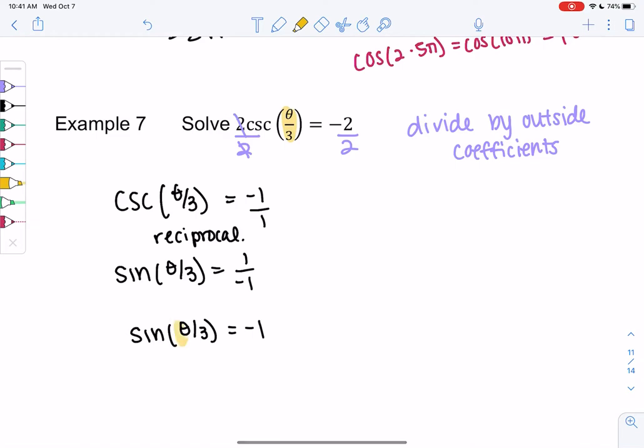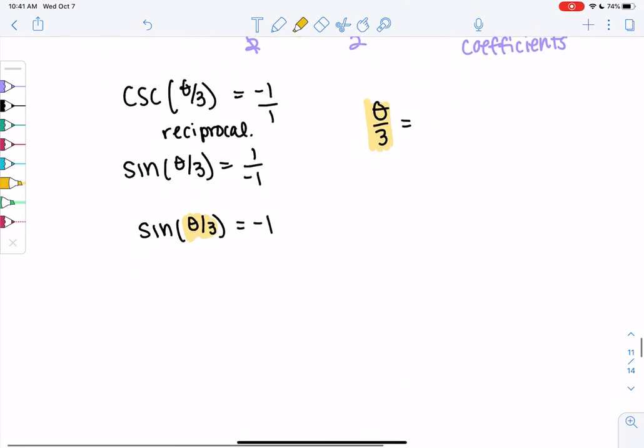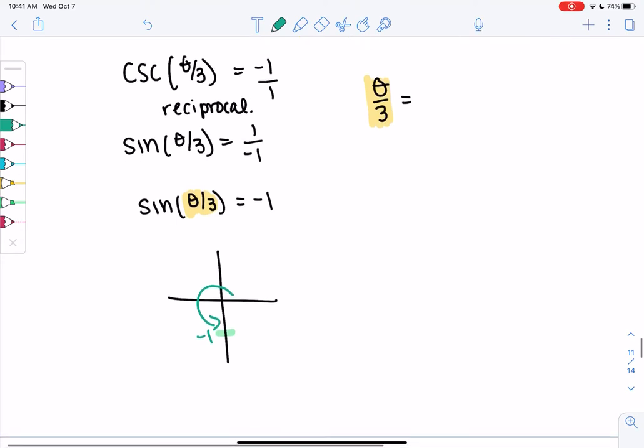All right. So we'll find when sine is negative 1, and we'll set that equal to θ/3. So let's see. Sine is the y value, so that'll be negative 1 down here, which would be 3π/2. And then, again, we can make one circle, two circles, three circles, so we'll add the 2πk.